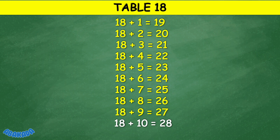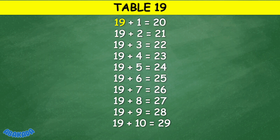18 plus 9 equals 27, 18 plus 10 equals 28. Table 19: 19 plus 1 equals 20, 19 plus 2 equals 21, 19 plus 3 equals 22, 19 plus 4 equals 23, 19 plus 5 equals 24, 19 plus 6 equals 25, 19 plus 7 equals 26, 19 plus 8 equals 27, 19 plus 9 equals 28, 19 plus 10 equals 29.